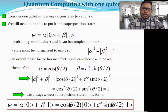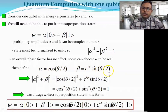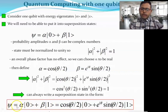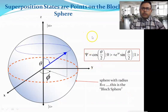The global phase factor has no physical effect, so we can choose α to be real. Thus α = cos(θ/2) and β = e^(iφ) sin(θ/2), which after normalization equals 1. This gives the equation: |ψ⟩ = cos(θ/2)|0⟩ + e^(iφ) sin(θ/2)|1⟩. We can represent any superposition state as a point on the Bloch sphere.